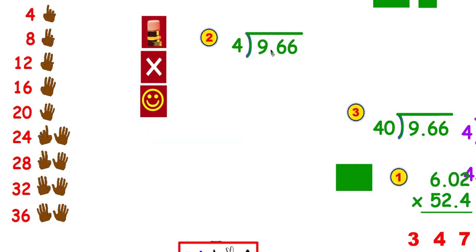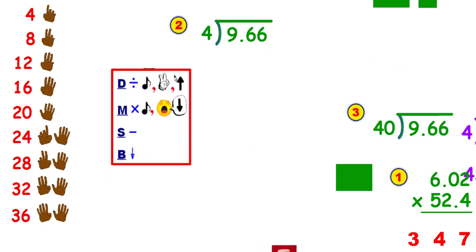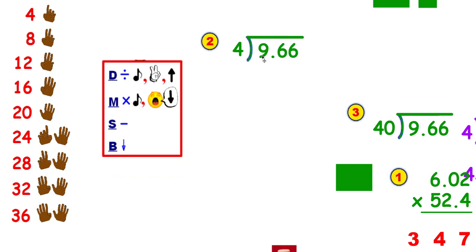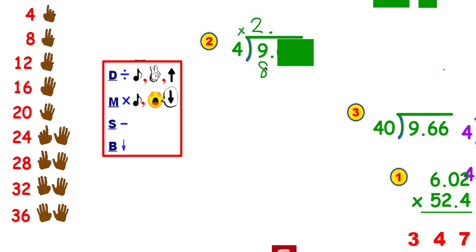Here are the steps of division. I'm going to cover up everything but the number that I'm working with. Before I do that, I need to float that decimal point straight up — he goes straight up, and now I can ignore him. How many groups of 4 can I get out of 9? 2. 2 times 4 is 8. I have 1 left over.